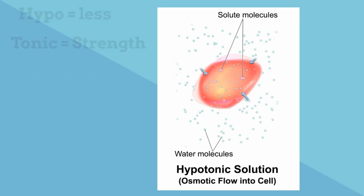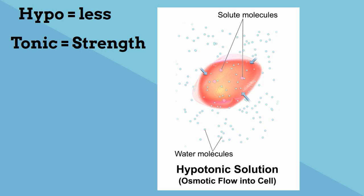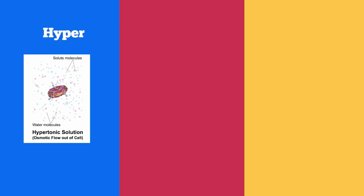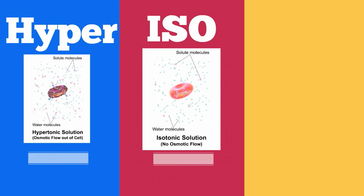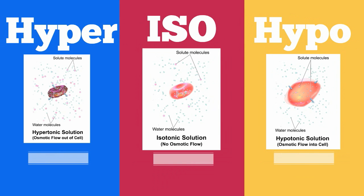With hypotonic, 'hypo' means less, so you have less solute on the outside, therefore more water, or a higher concentration of water on the outside, so water flows into the cell and the cell will expand. In summary: hypertonic has more solute and less water so water flows out of the cell; isotonic they are equal; and hypotonic has less solute therefore more water so water flows into the cell.